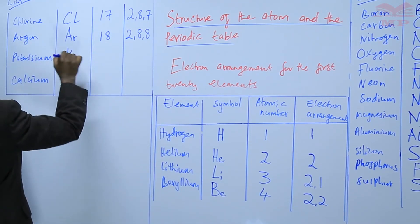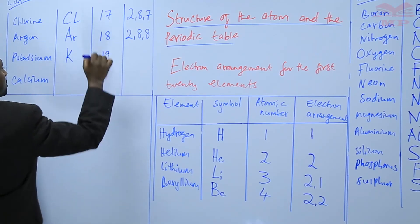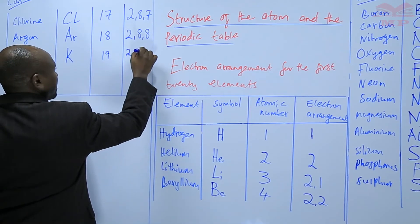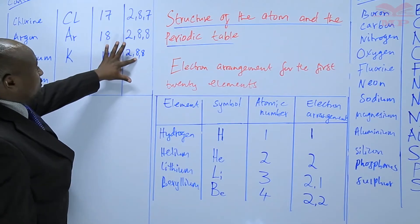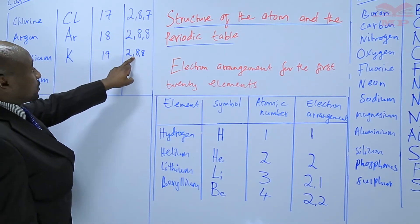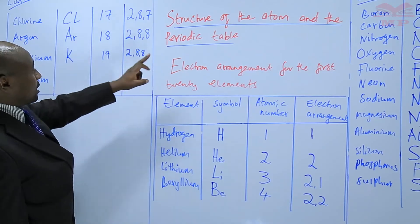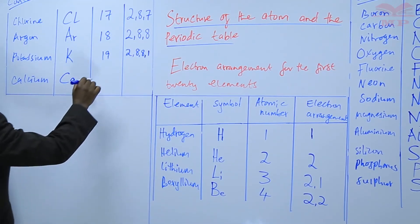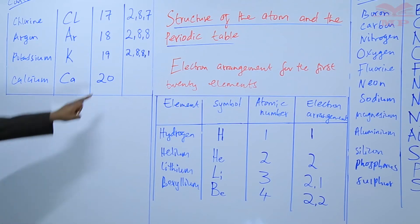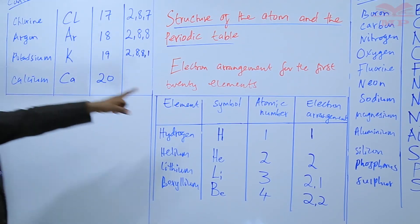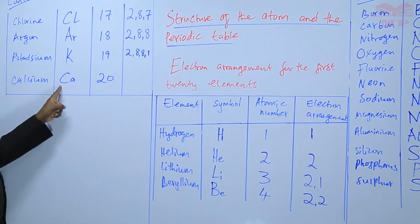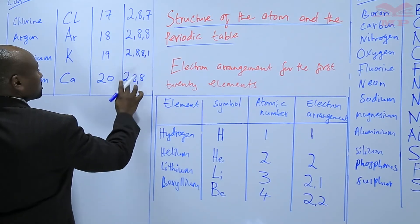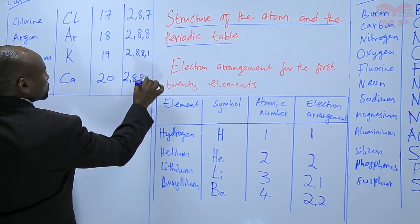Potassium - the symbol is K, atomic number 19, so 19 electrons. Arrangement: 2, 8, 8. The third energy level is full because it carries a maximum of 8. So the remaining electron - that's the one - you put it to the next energy level. Finally, calcium - atomic number 20, the 20th element. Arrangement: 2, 8, 8, 2. So that is the arrangement.